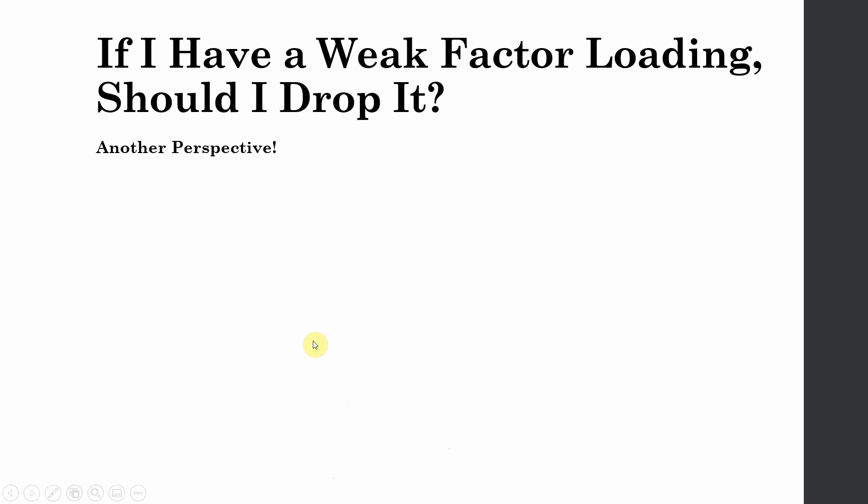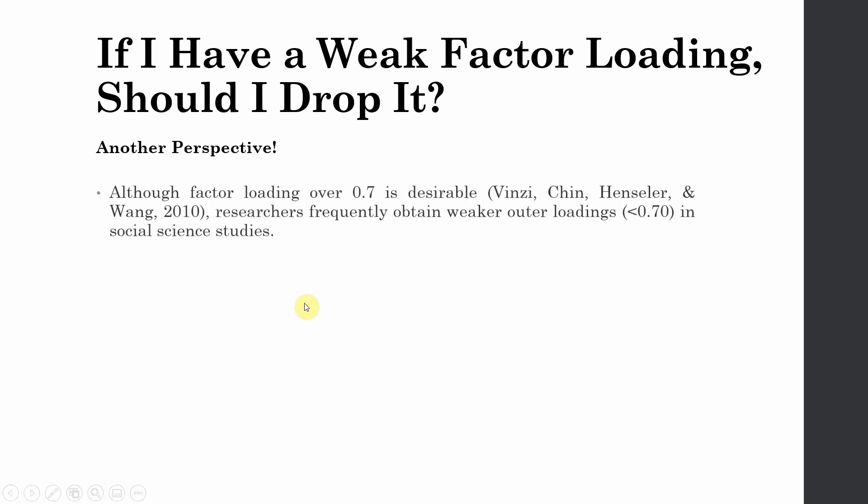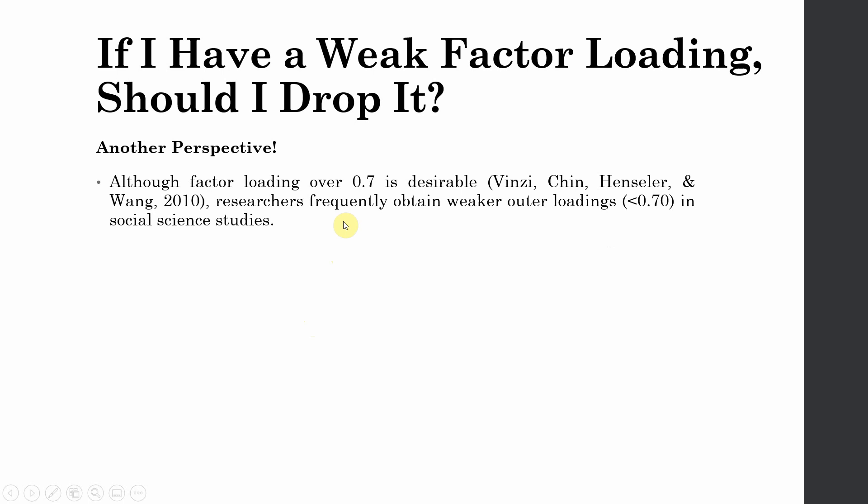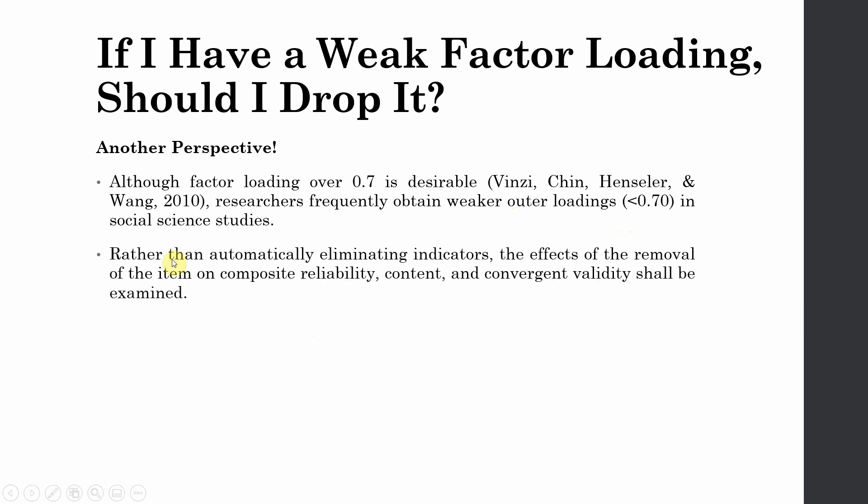There is another perspective as well. Although factor loadings over 0.7 are desirable, researchers frequently obtain weaker outer loadings in social sciences studies. Rather than automatically eliminating indicators, the effects of the removal of item on composite reliability, content, and convergent validity shall be examined. If I delete a particular indicator, how does it affect my composite reliability, content, and convergent validity?